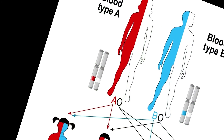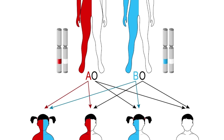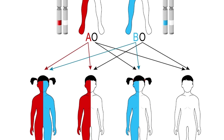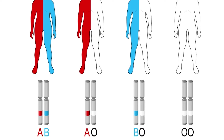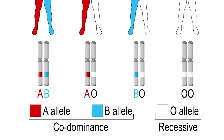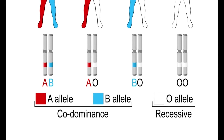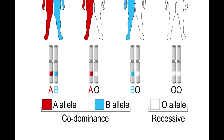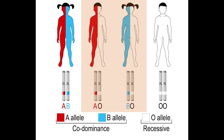Now let's consider codominance. In codominant traits, the heterozygote is not a unique phenotype different from both homozygotes. Rather, the heterozygote shows both of the phenotypes. One classic example of codominance is the AB blood type. Blood type is also a good example of a trait with multiple alleles: A, B, and O. The A and B alleles show classic dominance over the O allele. However, when A and B are present in the same cell, both are expressed.